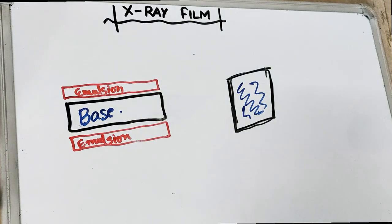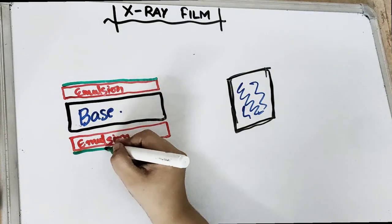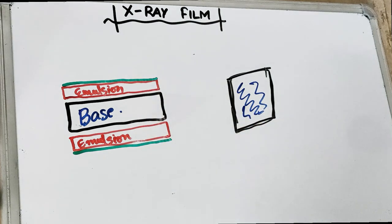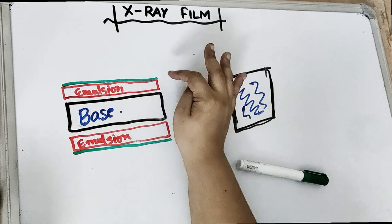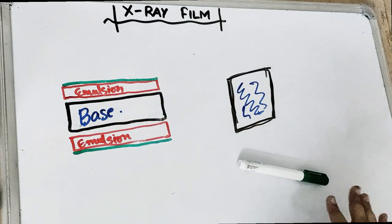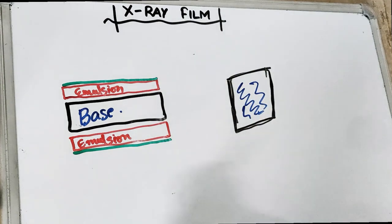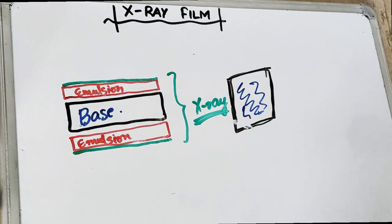And on top of that, because we do not want the emulsion to be damaged, the topmost layer we have is the super coat. This coating prevents mechanical damage to the emulsion — if there is any scratch or pressure, we do not want the emulsion damaged. So those are the components we call the x-ray film: this thin sheet is composed of all these layers.